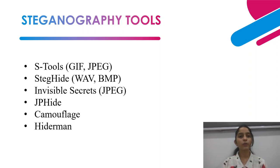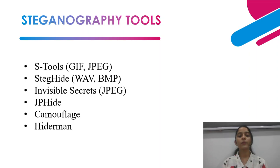Some steganography tools include: S-Tools, which we used for image steganography and supports GIF and JPG formats; StegHide, for web and BMP formats; MP3Stego, which is basically for videos; Invisible Secrets and JPHide, again for JPG; Camouflage; and Hidderman.